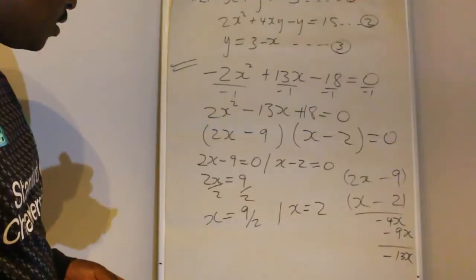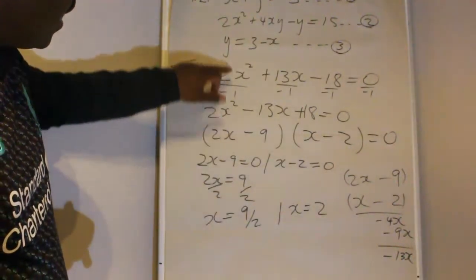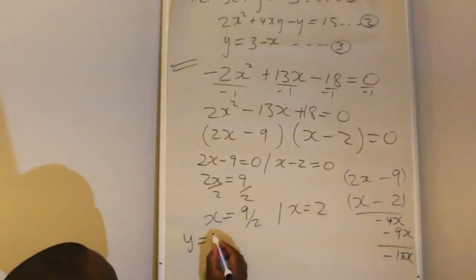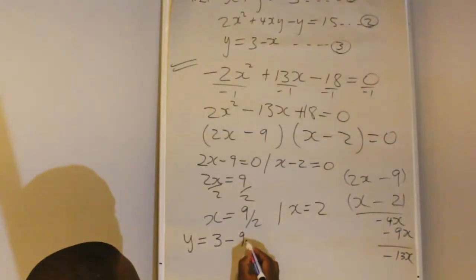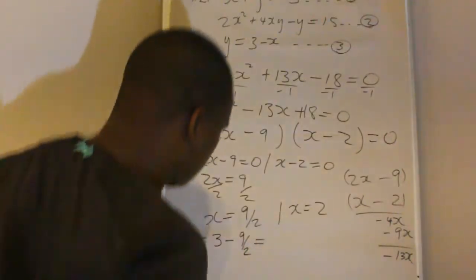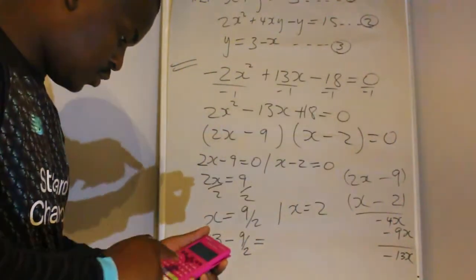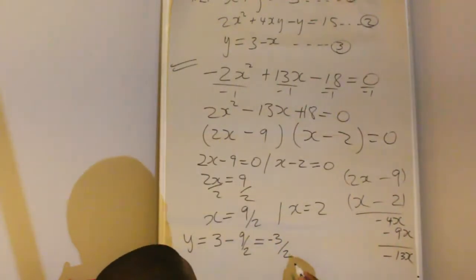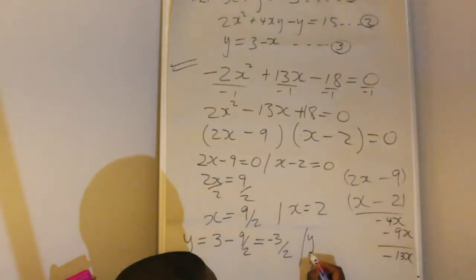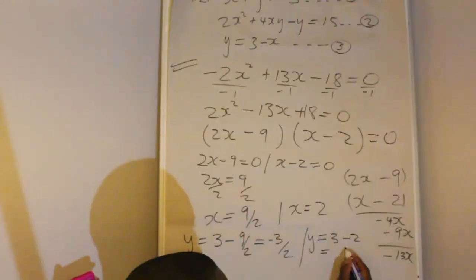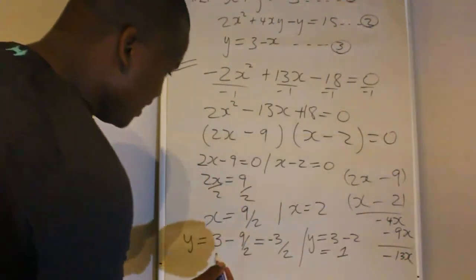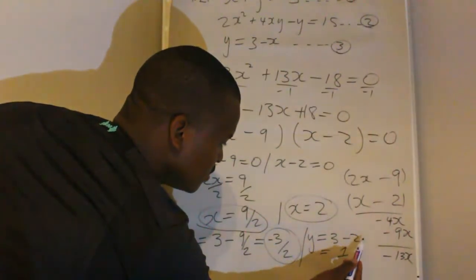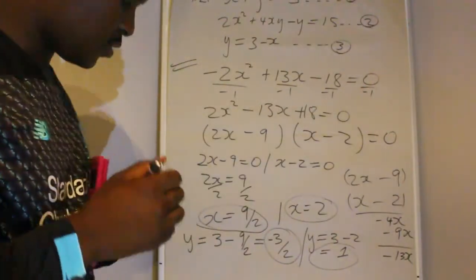These are your x values. To find the y values, substitute each x back into the third equation: y equals 3 minus x. For x equals 9 over 2: y equals 3 minus 9/2, which gives negative 3 over 2. For x equals 2: y equals 3 minus 2, which equals 1. These are your x and y values for the simultaneous equation.